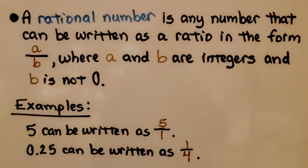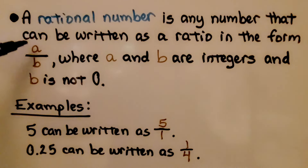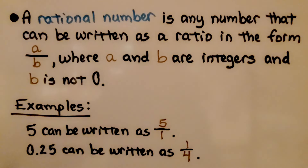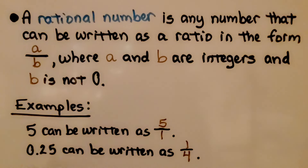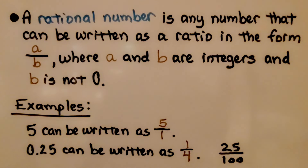A rational number is any number that can be written as a ratio in the form of a over b, where a and b are integers — positive and negative whole numbers — and b is not zero. Some examples: 5 can be written as 5 over 1 as a fraction. And 25 hundredths can be written as 1 fourth, or it could be written as 25 over 100. It can be written as a fraction.